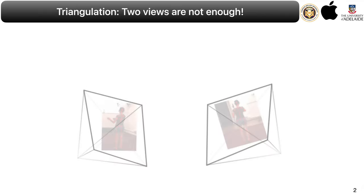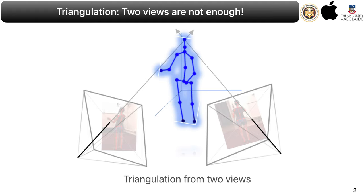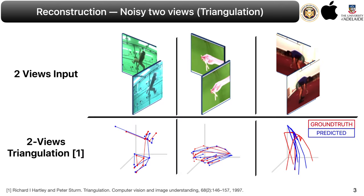Triangulation refers to determining the location of a point in 3D space from projected 2D correspondences across multiple views. In theory, only two calibrated camera views should be necessary to accurately reconstruct the 3D position of a point. However, any imperfections in 2D key points or calibration could lead to poor 3D reconstructions. The two views are therefore insufficient for robust triangulation to accurately reconstruct the 3D structure in the presence of noisy 2D key points.